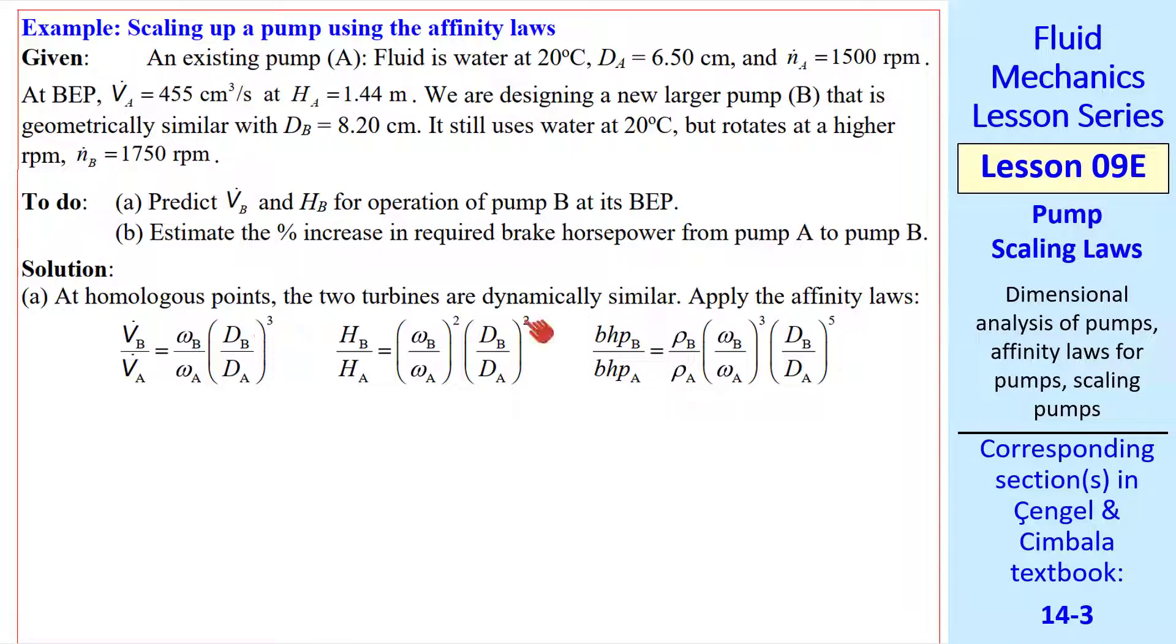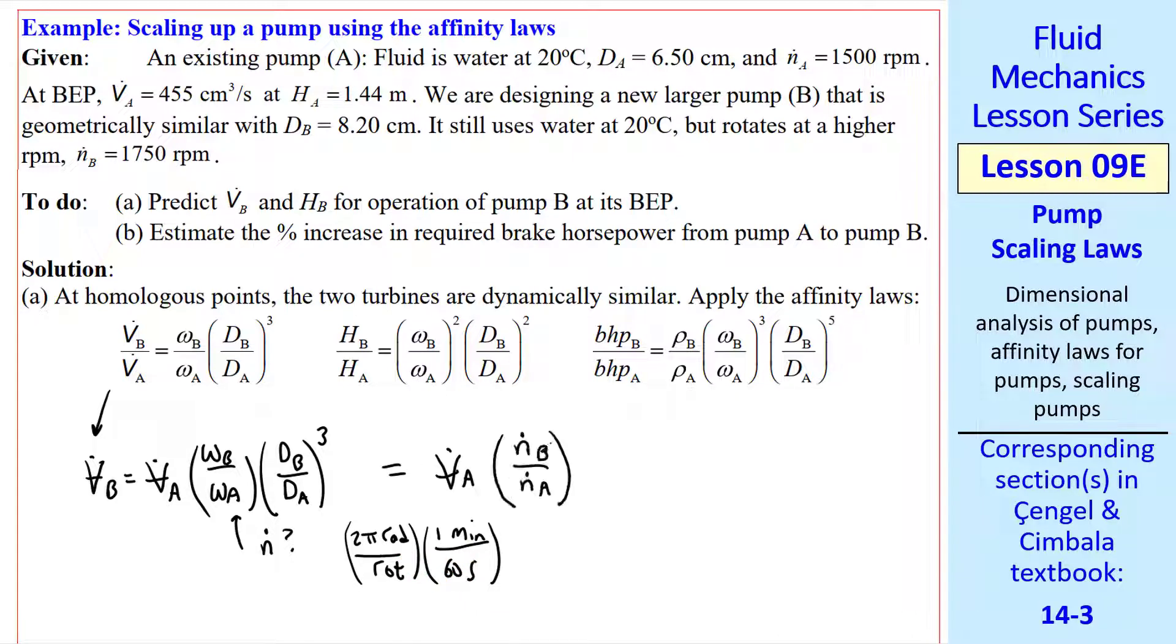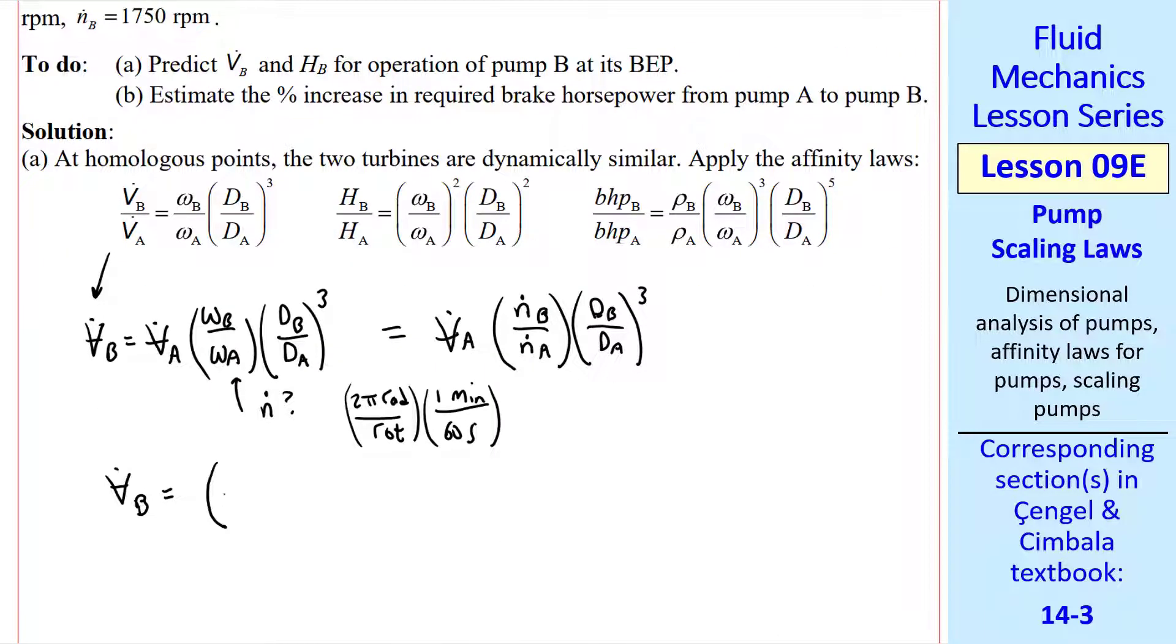So V dot B is V dot A times the ratio of omegas times the ratio of diameters cubed. We want to use N dot, so we'd have to convert using two pi radians per rotation and one minute per 60 seconds. But since we'd be applying these unity conversion ratios on both the numerator and denominator, the two pi's, the 60's, and these units all cancel out. So we can write this as V dot A, N dot B over N dot A, DB over DA cubed. This is the case only if you do the same thing on the numerator and denominator, so be careful. Using the given values, we calculate V dot B as V dot A times the ratio of RPMs times the ratio of diameters cubed, and we get this value.